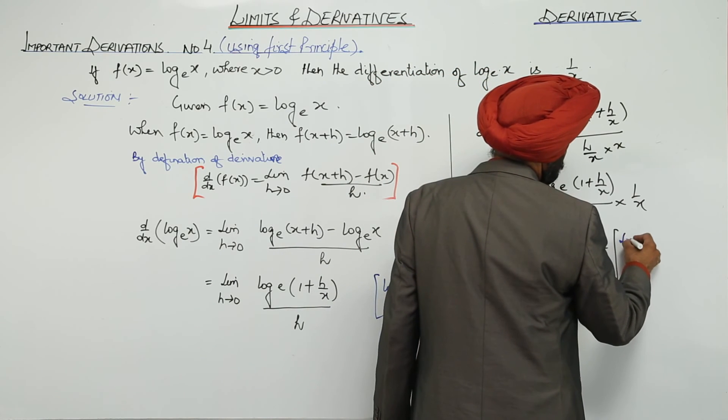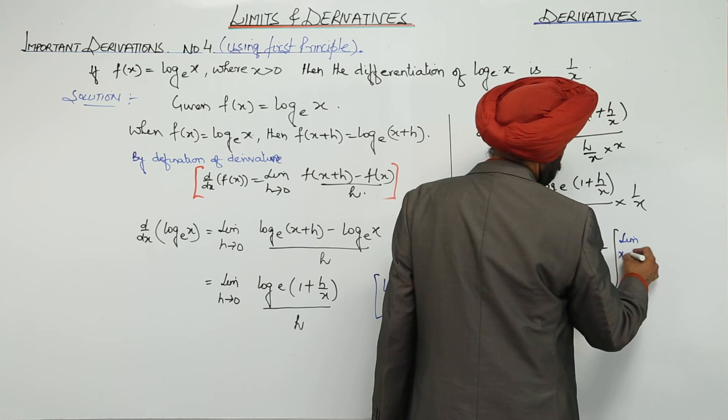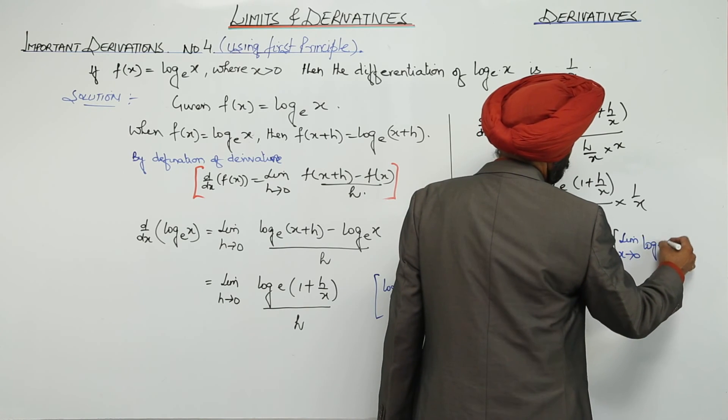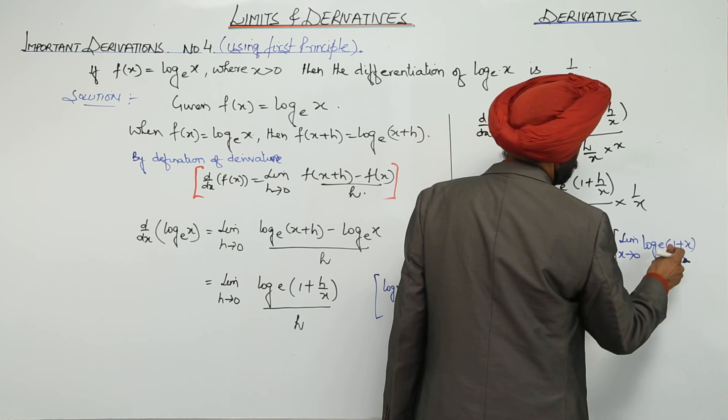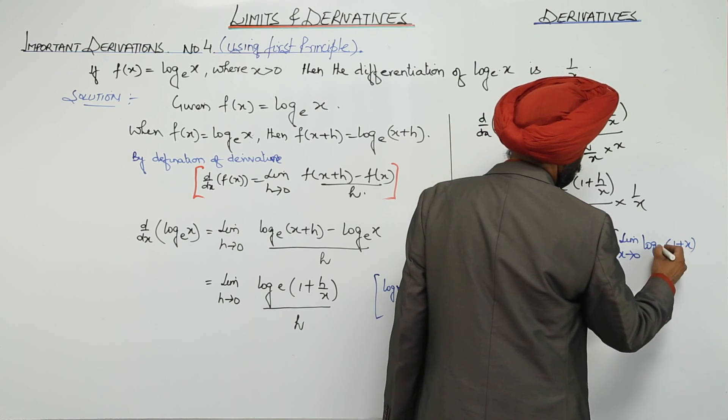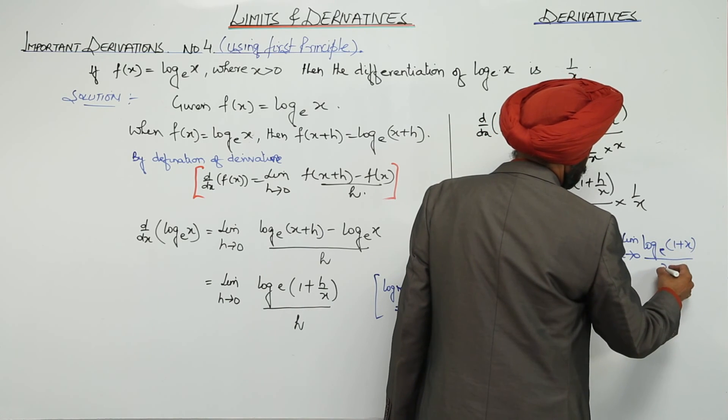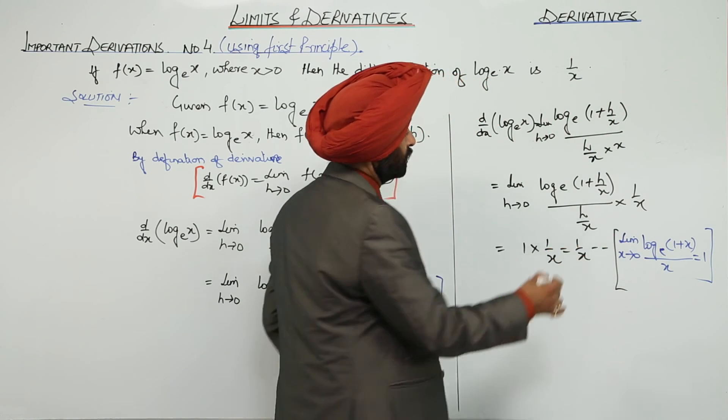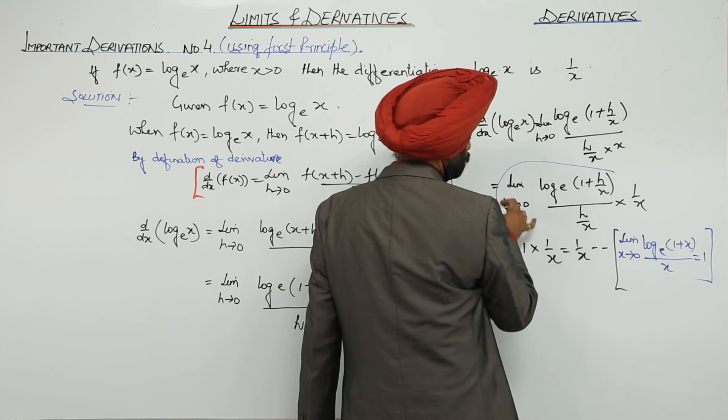Formula what we have used? Limit x approaches to 0, log e (1 plus x) upon x. This is 1. This formula we have used in place of this whole part.